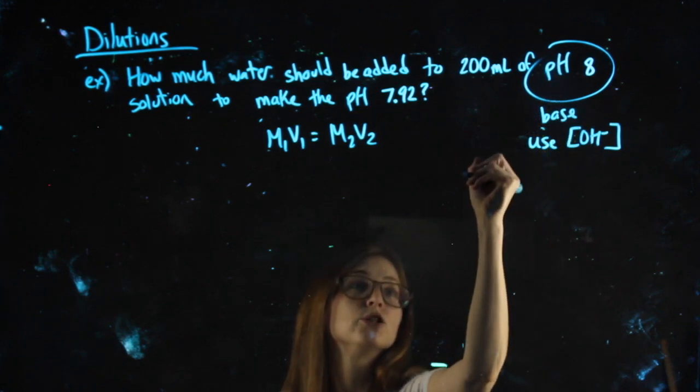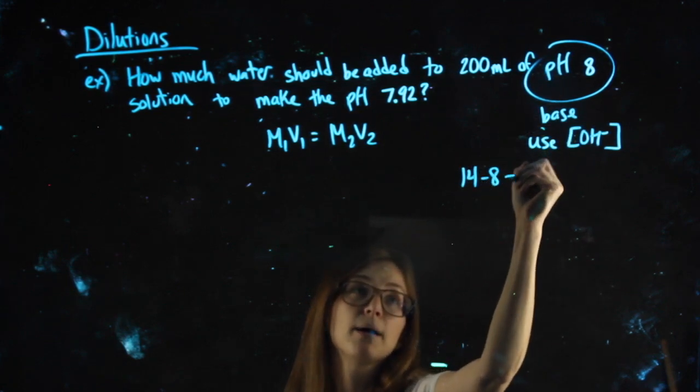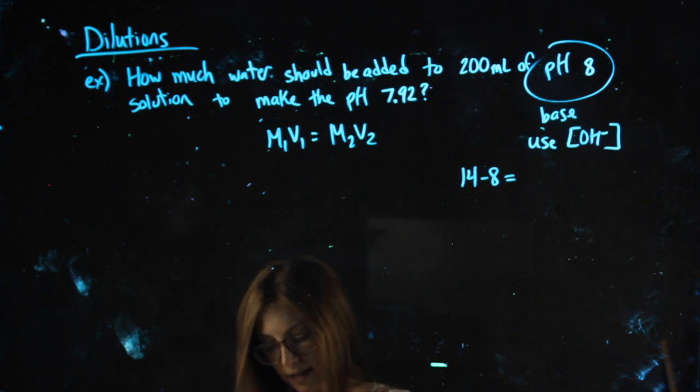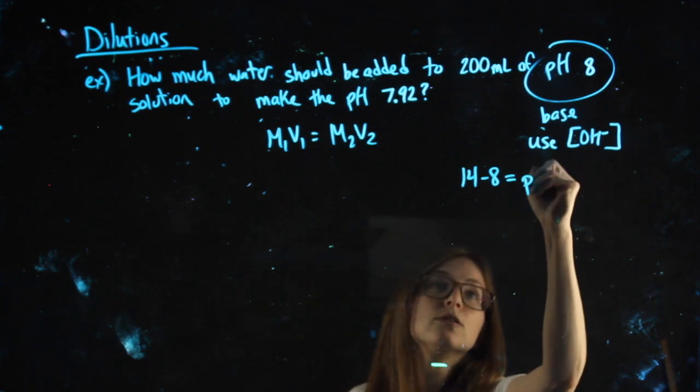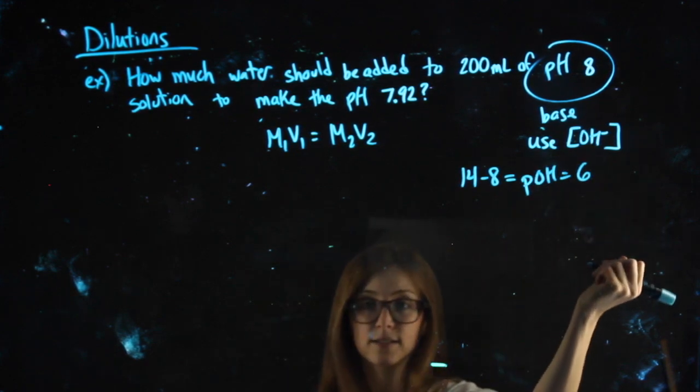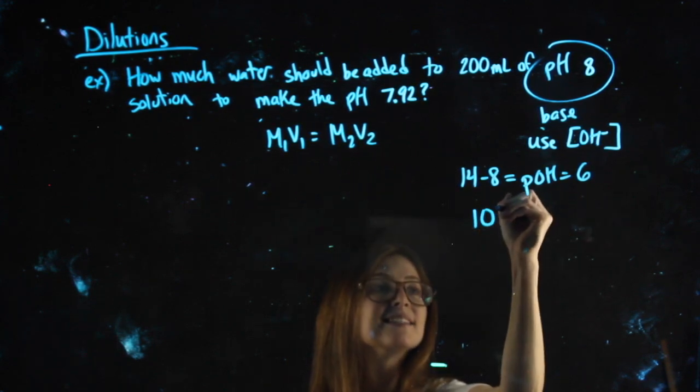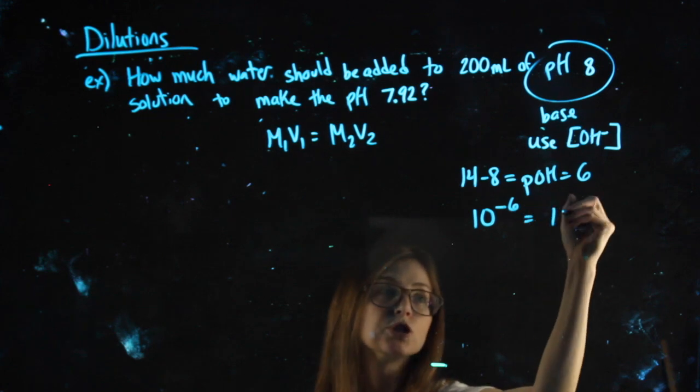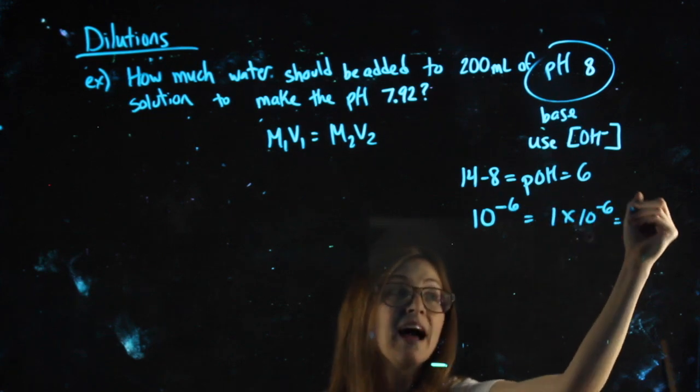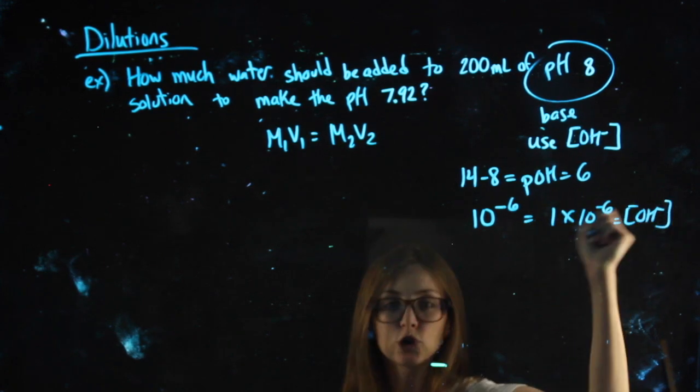So I'm going to start by saying 14 minus my pH. 14 minus 8 gets me my pOH of 6. pOH still can't be plugged in here. But 10 to the negative pOH, that does get me my OH- concentration, my OH- molarity.